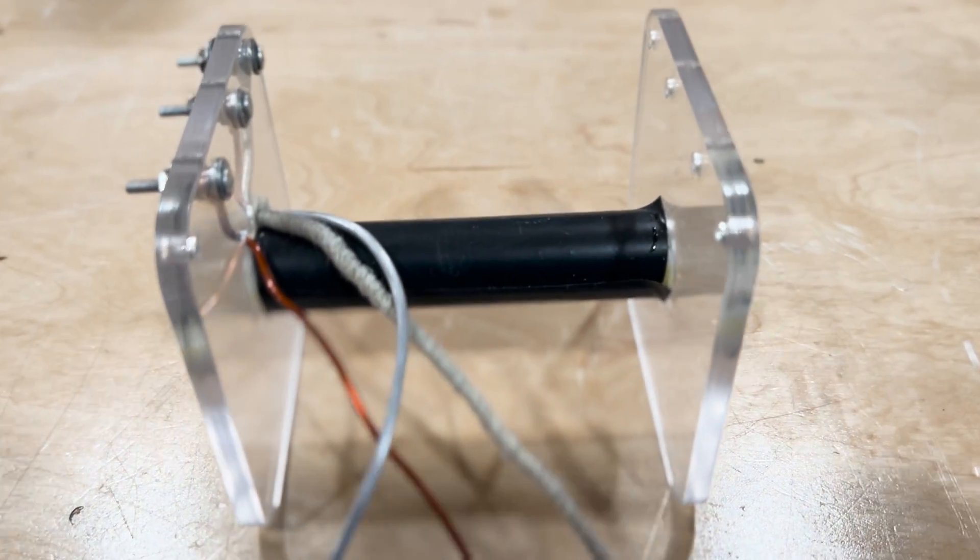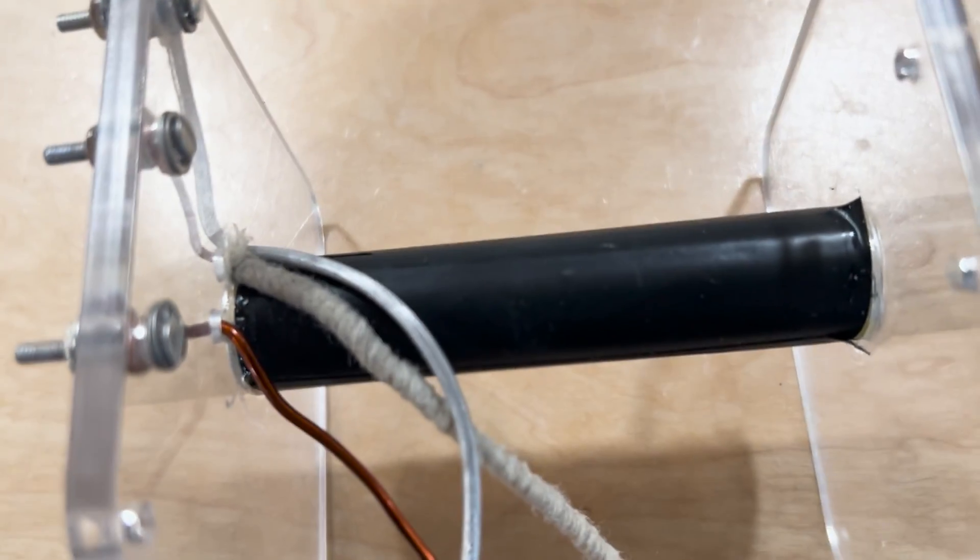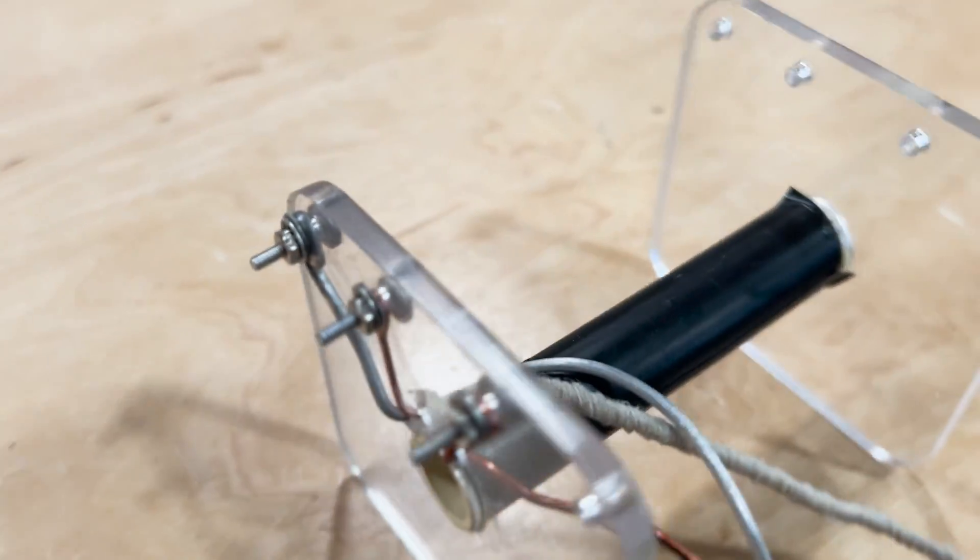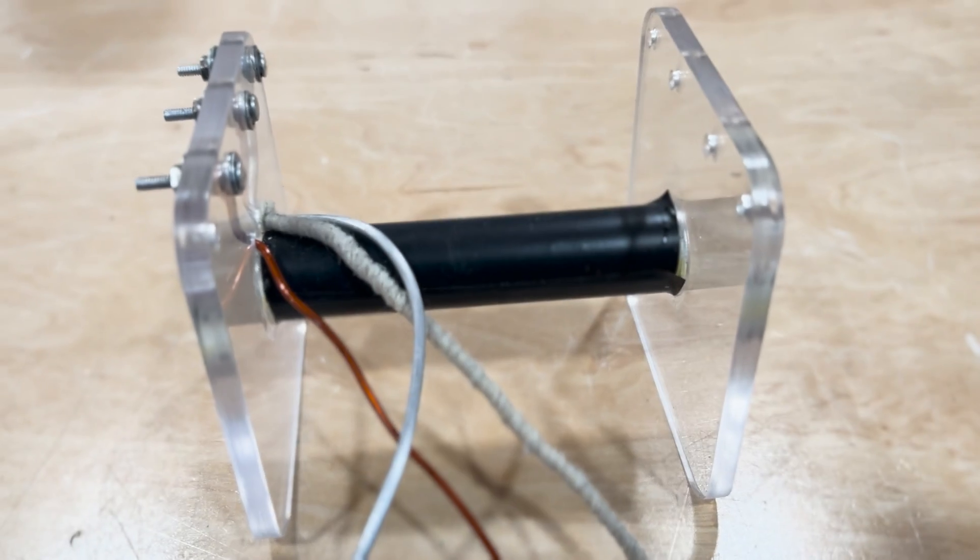It's time to wind the coil. All three conductors have to be wound simultaneously. The aluminum wire and cotton covered copper wire will generate electricity.